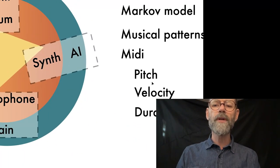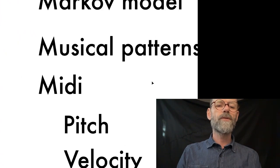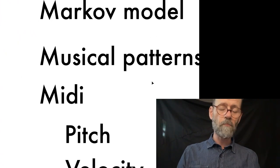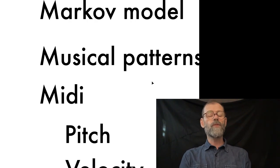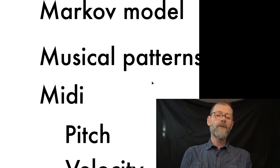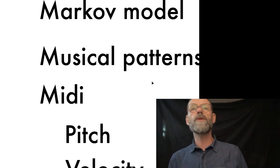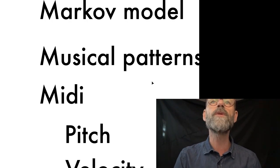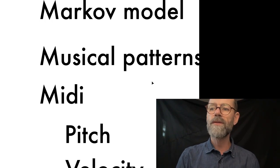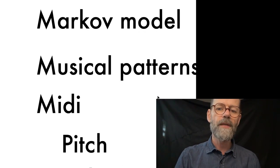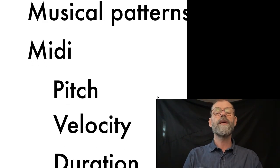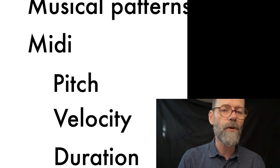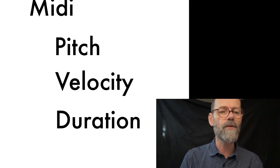The concepts we're going to touch upon today will be the so-called Markov model, which is a stochastic model for predicting what will happen according to a machine learning process, where a machine learns from its environment and will try to predict the most possible next step. We're going to talk about musical patterns — the musical patterns that the machine should learn from — and in order to do that, we will have to talk about MIDI.